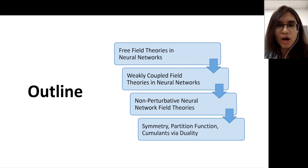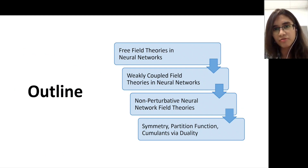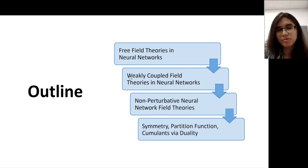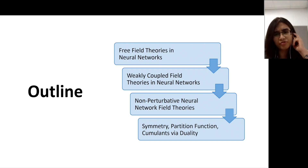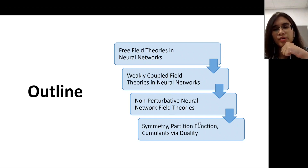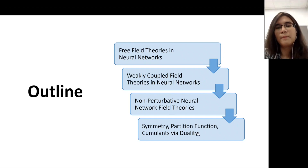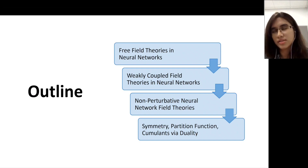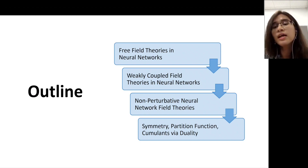Here is the outline of my talk. First, I will discuss the free field theory limit of neural network field theories. Then the weakly coupled field theory limit briefly. Then the non-perturbative, non-Lagrangian field theory limit, where I will discuss symmetry, partition function, and cumulants — connected correlators — and see how much information we can gain even when the action is unknown.